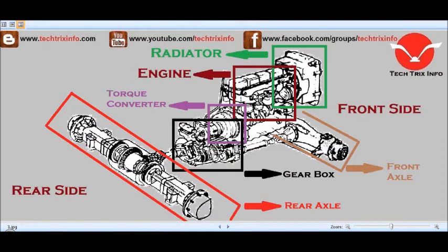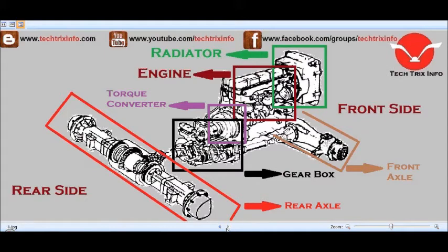The engine provides the power — it is the prime mover — which is transmitted through the torque converter and the gearbox, reaching the rear axle and the front axle. Finally, the drive reaches the wheels which helps the JCB machine to mobilize. That's the automobile part. Now let's see the hydraulic components.